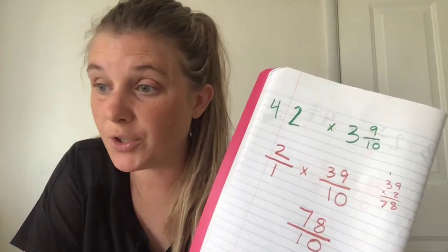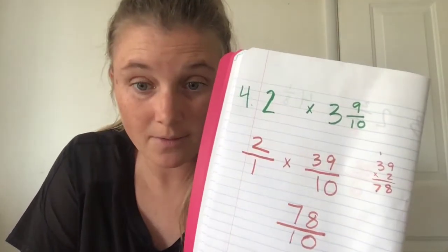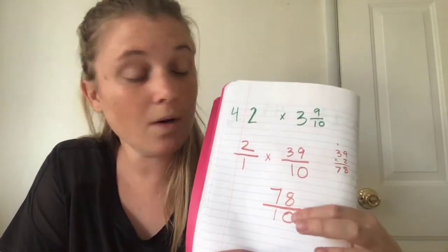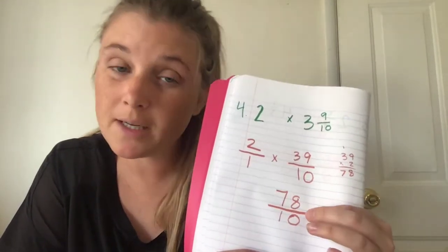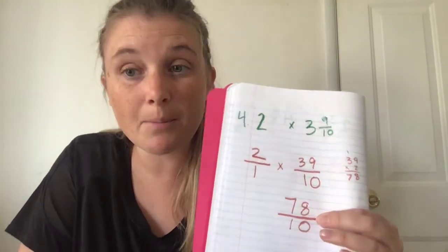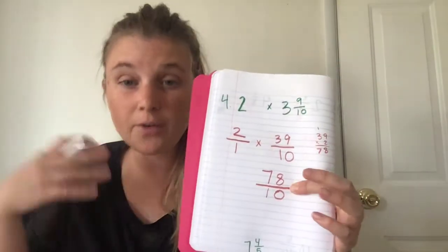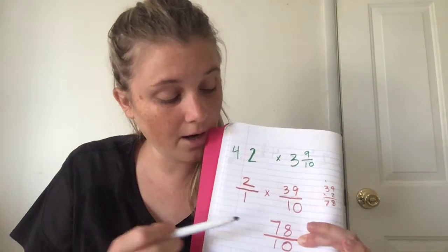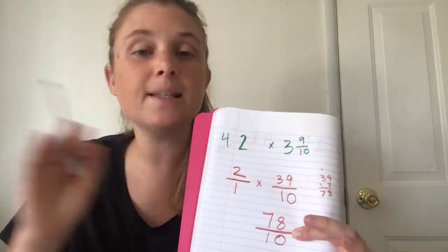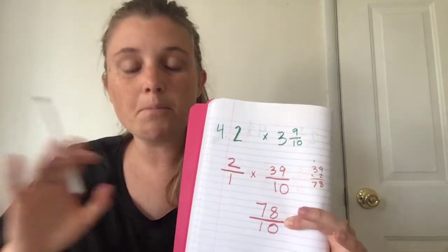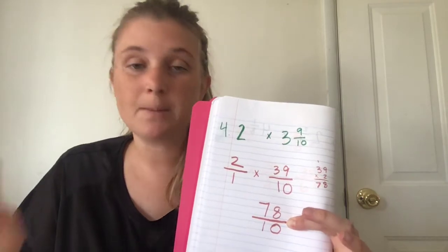Okay, so now what we need to do is simplify. Well, our answer, we don't want it to be an improper fraction. What do we want it to be again? A mixed number. Back to a mixed number. Your answer, whenever you have an answer, you're not gonna leave it like that. You're gonna simplify it down. You're gonna make it into a mixed number.